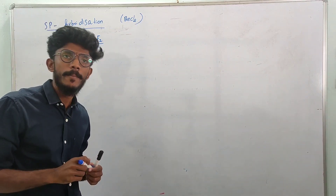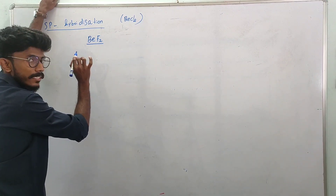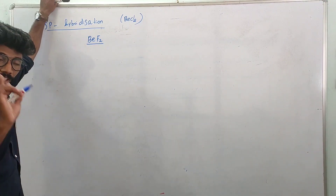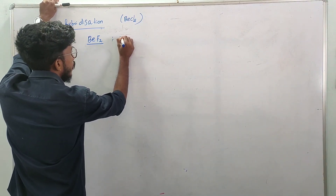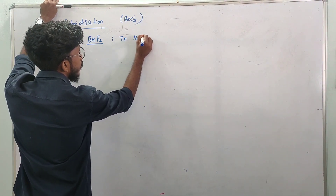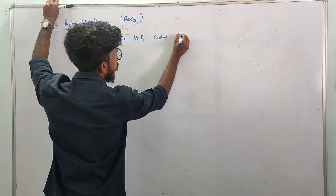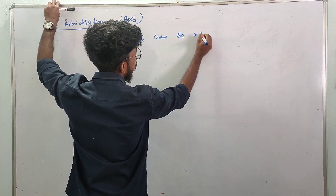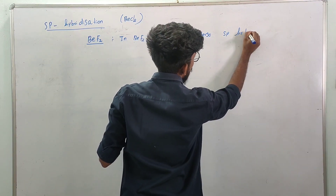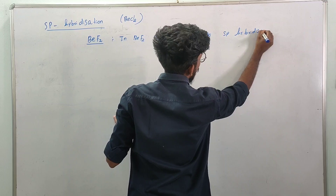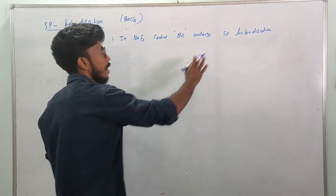In BeF2, the central atom is beryllium. How do we do hybridization? The central atom is beryllium. The atomic number of beryllium is 4, so the electronic configuration is 1s2, 2s2. If someone asks, we need to know how to determine the hybridization.